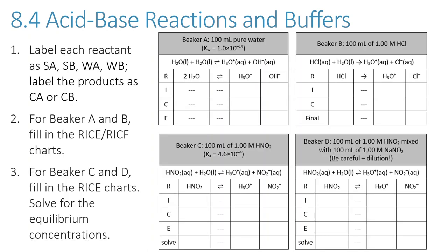Here we have four different beakers representing different solutions. We're going to label each reactant as strong acid, strong base, weak acid, or weak base, and label our products as conjugate acid and conjugate base. For beakers A and B, we'll fill in the RICE and RIFF chart. For beaker A and B we use 'final' because we're dealing with a strong acid so we don't have an equilibrium, but we do achieve some final state. For beakers C and D we'll fill in the RICE charts and solve for our equilibrium concentrations.